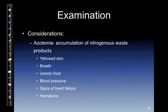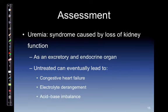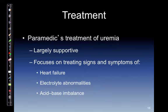The more of these symptoms that you have, the easier it is to say that this person is probably in acute renal failure. Assessment: uremia is a syndrome caused by the loss of kidney function as an excretory and endocrine gland. Untreated, it can eventually lead to congestive heart failure, electrolyte derangements, and acid-base imbalance — primarily with potassium. Treatment: paramedic treatment of uremia is largely supportive, focusing on treating signs and symptoms — if there's heart failure, treat the heart failure; electrolyte abnormalities, treat those; acid-base imbalance, treat the acid-base imbalance.